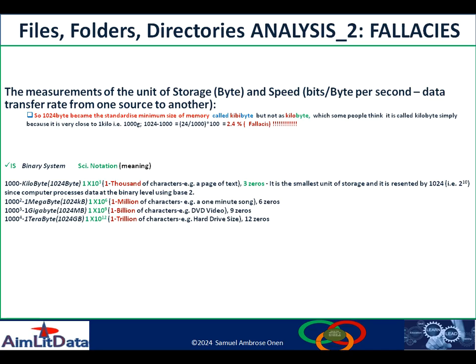We also looked at terabyte as being one thousand raised to the power of four, meaning you multiply one thousand by itself four times. That gives us 1 × 10¹² as the scientific notation, which is equivalent to one terabyte. In the binary system, one terabyte is equivalent to 1024 gigabytes, representing one trillion characters.